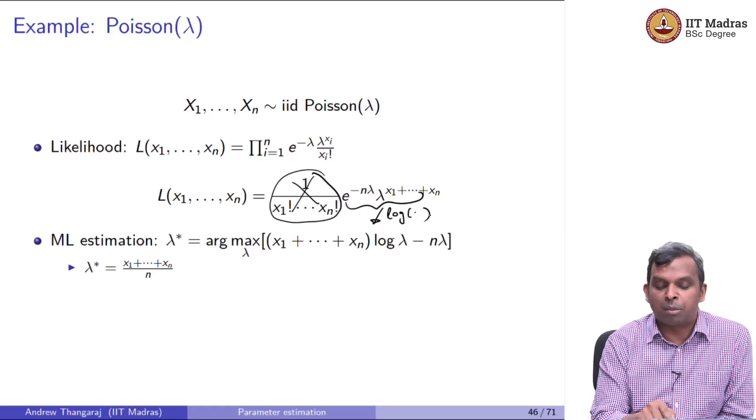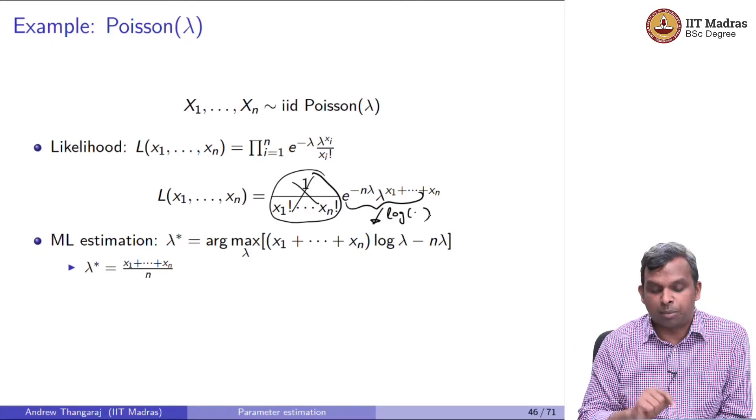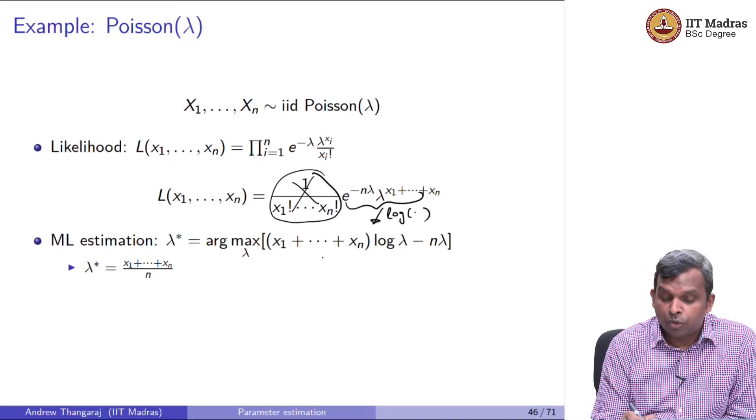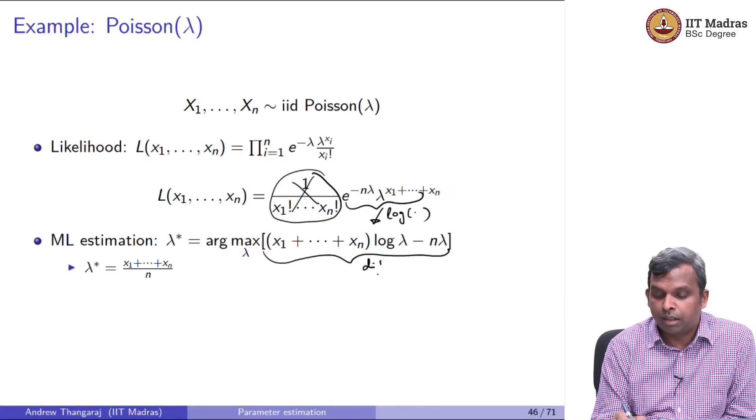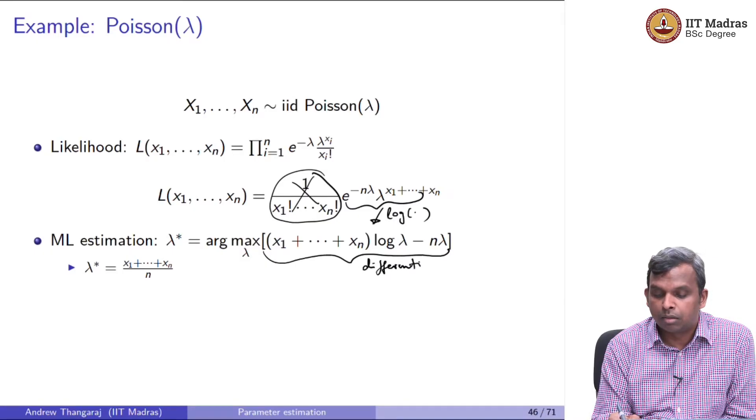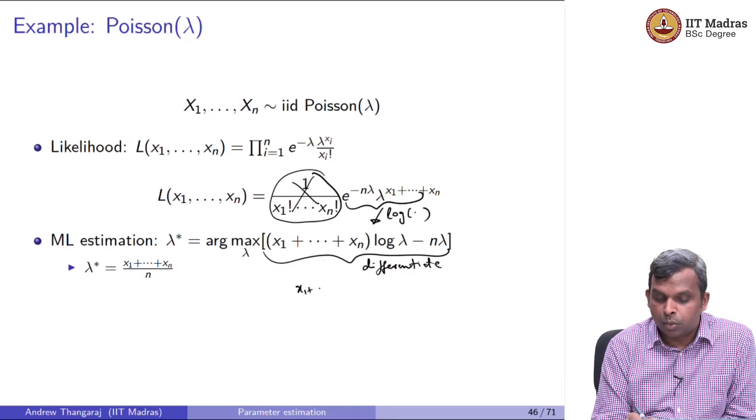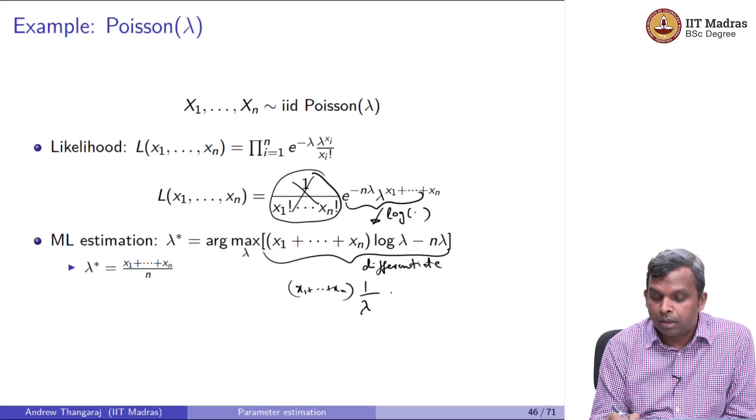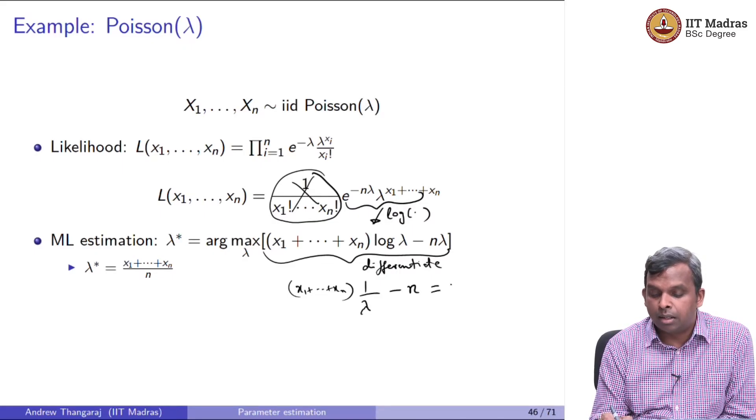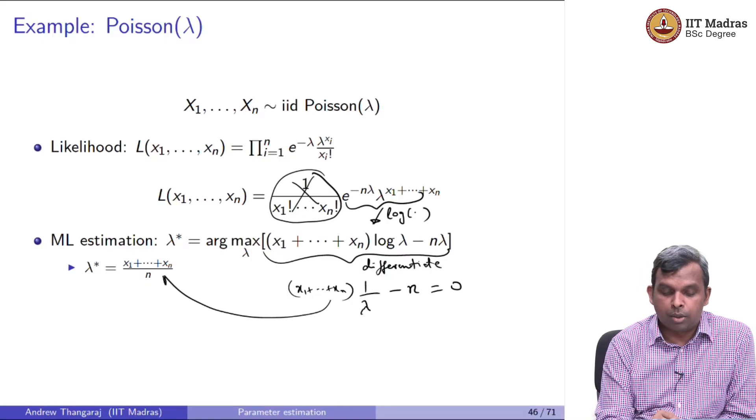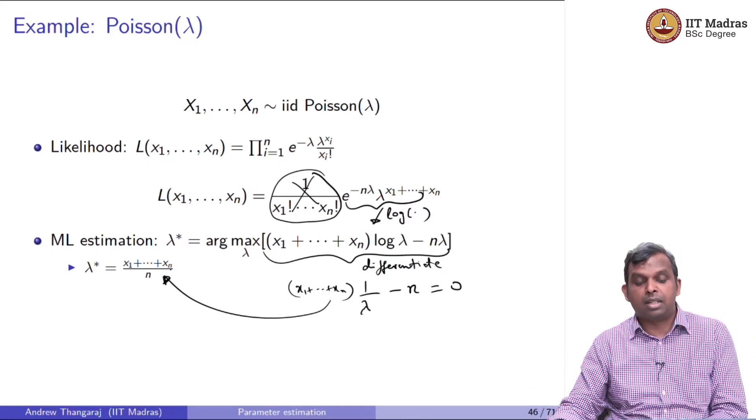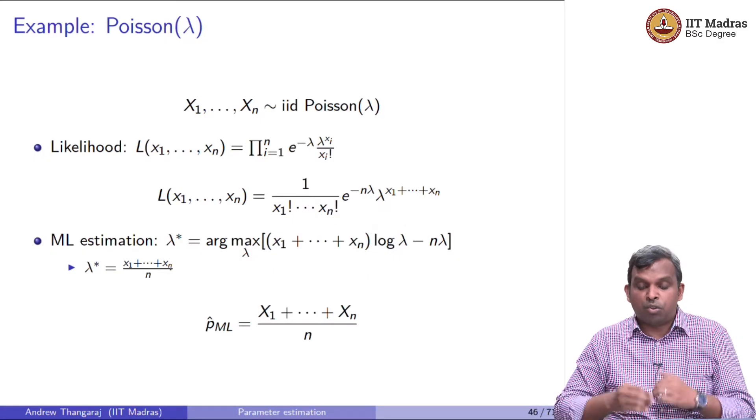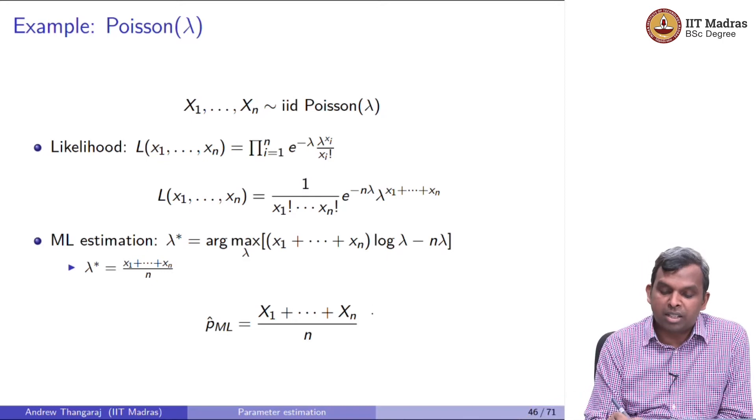So when you take log, you will get (x1 + x2 + ... + xn) times log λ minus nλ. Look at how simple the likelihood function finally became when you want to maximize. My λ* is just arg max over λ of this expression. So how do I get λ* equals this? I have to differentiate and equate to 0. If I take this guy and differentiate, I am going to get x1, remember x1 to xn is just a constant, log λ will be 1 by λ and minus nλ derivative is just n equal to 0. You solve this, you get λ* is (x1 + x2 + ... + xn) divided by n.